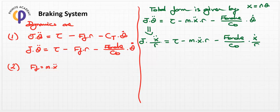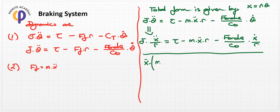Reorganizing the equation, we collect the ẍ terms on the left-hand side. This gives ẍ times the quantity (M*R + J/R) on the left-hand side, and the remaining terms on the right.